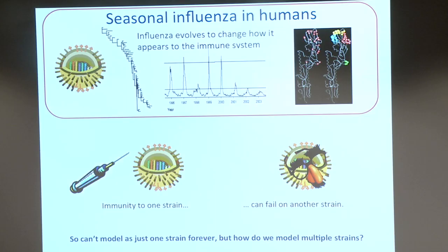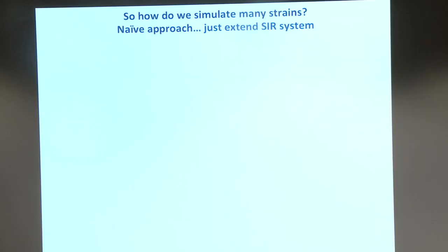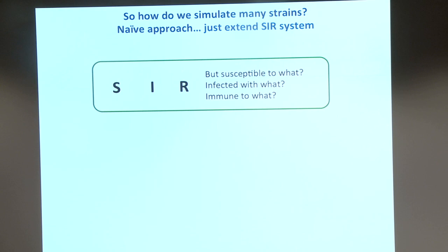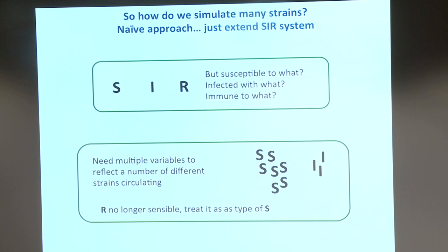So this is what we'd like to model. I can't just model flu as one strain — how do we do multiple strains? We've got this SIR compartmental model — how do I turn that into a many-strain model? Naive approach: just extend the SIR system. But what does S mean now — susceptible to which strain? I infected with which strain? You start to realize we need lots of different S's and I's. Actually, we don't need the R's — they're just a special case of S: susceptible to nothing.